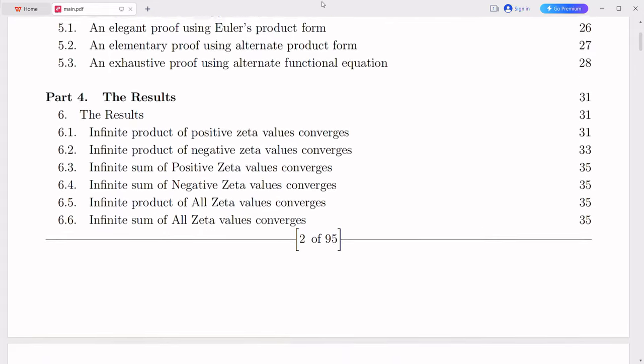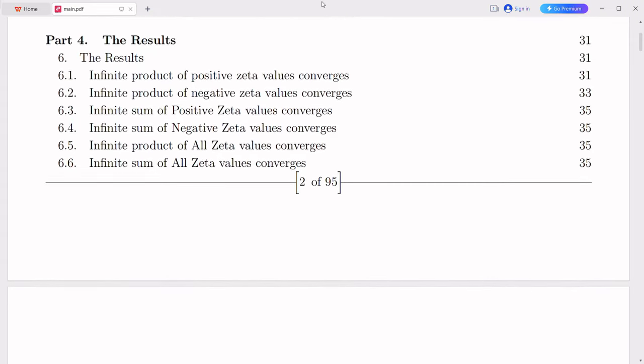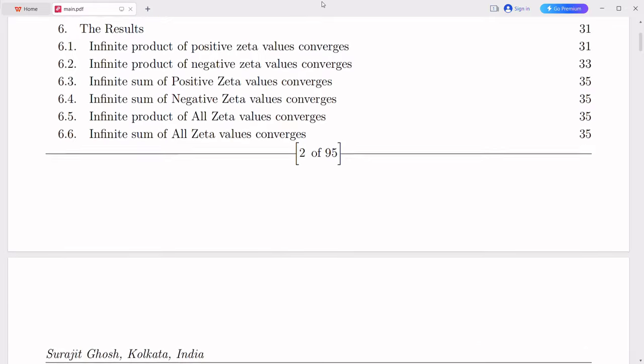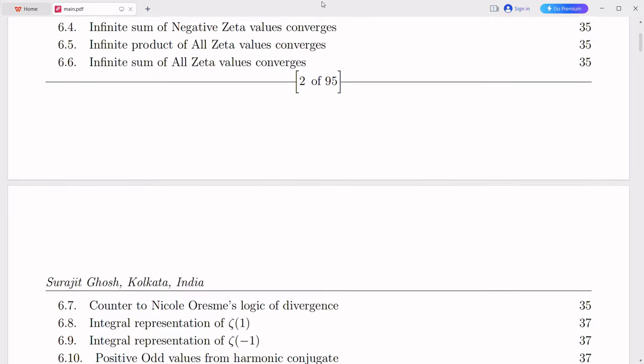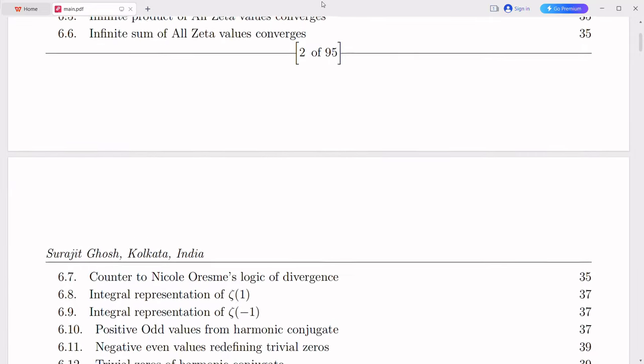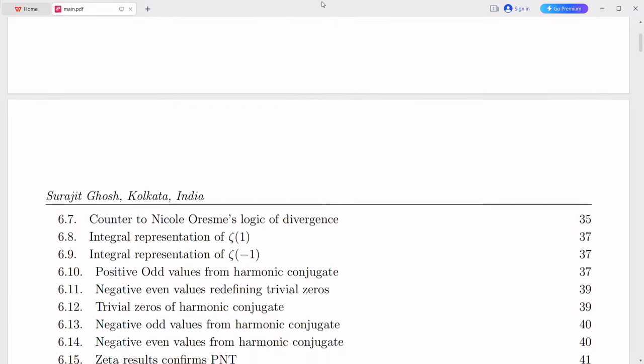To broaden the domain of the Riemann zeta function, we generally employ a technique known as analytic continuation. Analytic continuation enables us to extend the definition of a function to a larger domain. In the case of the zeta function, we can extend it to the entire complex plane, excluding the point s equals 1, where it possesses a simple pole.